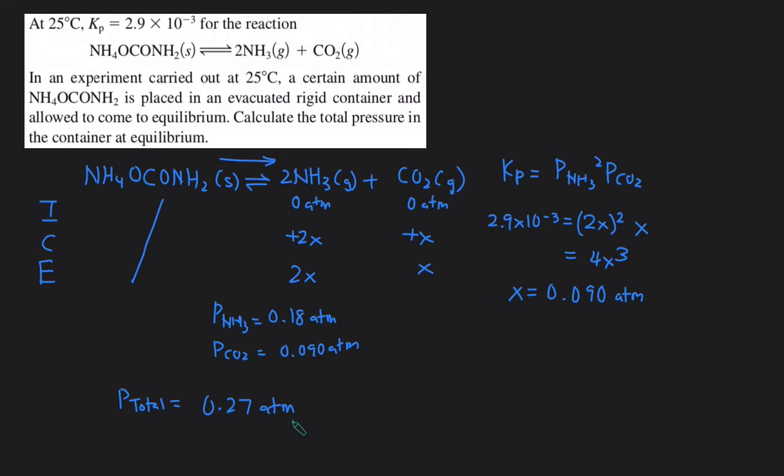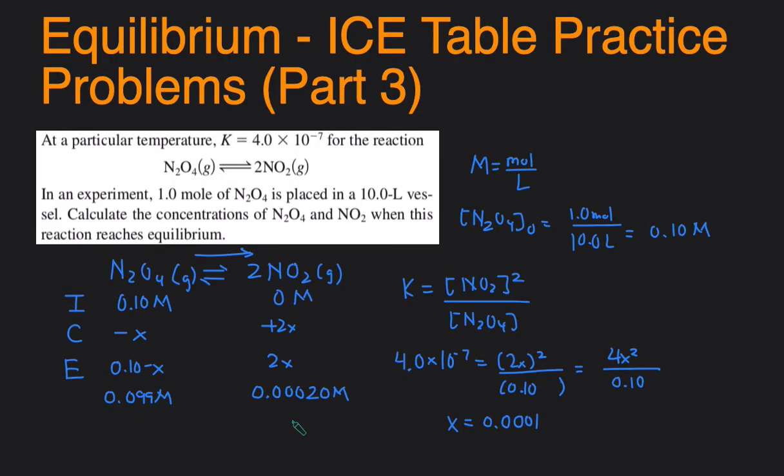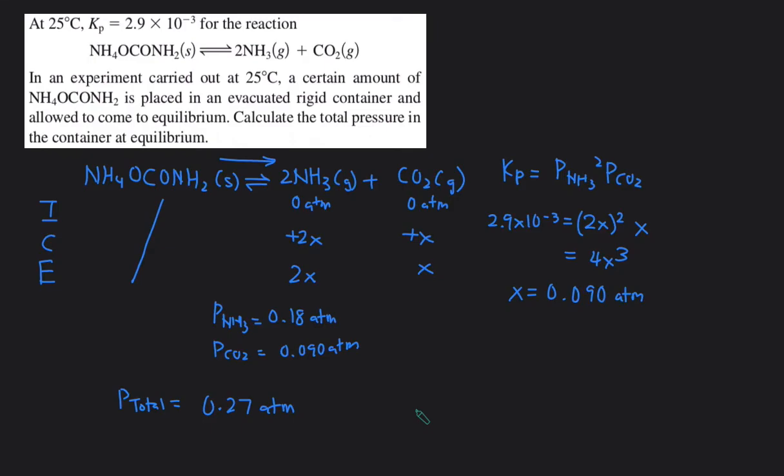In this video, we took a look at other ways that ICE table questions could be asked and some other concepts. One of the new concepts that we talked about in this series is that if K is small, then you can assume that the plus x's or the minus x's are negligible. So that will make your calculation easier. And then we also took a look at a problem where we were given the Kp, and we did an ICE table in terms of pressure, and then we're asked to solve for the total pressure in the container.